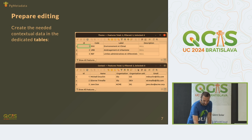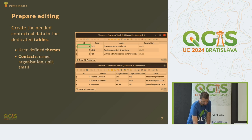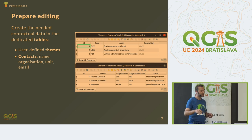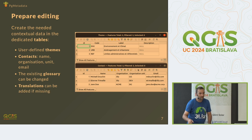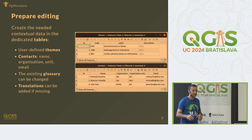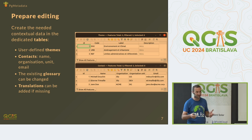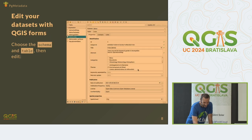Here you can add new themes or create new contacts. You can define your own themes. One contact can belong to one or many datasets, using relations in QGIS. We also added translations — it's in French, English, Italian, German, and other languages as well. If some are missing, please ping us — we'll be happy to add them.